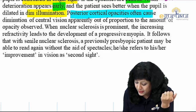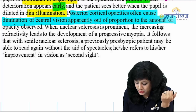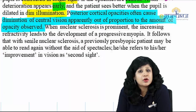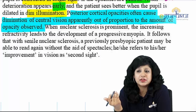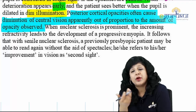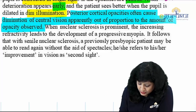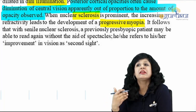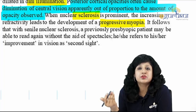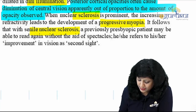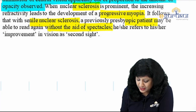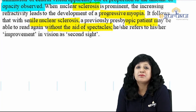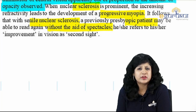Posterior subcapsular opacities tend to affect vision much more than anterior ones because the nodal point passes through that axis. Nuclear sclerosis leads to progressive index myopia causing second sight. A previously presbyopic patient may be able to read without spectacles — this seems miraculous because a senile cataract patient over 60 would normally use reading glasses after presbyopia onset at 40-45 years.